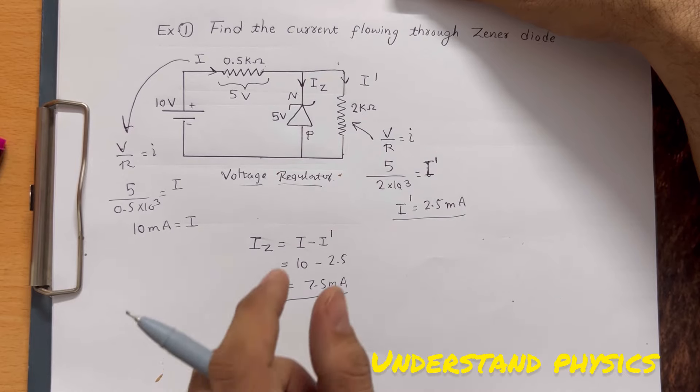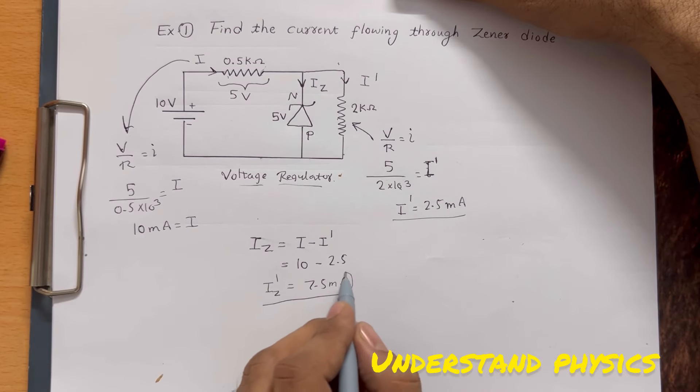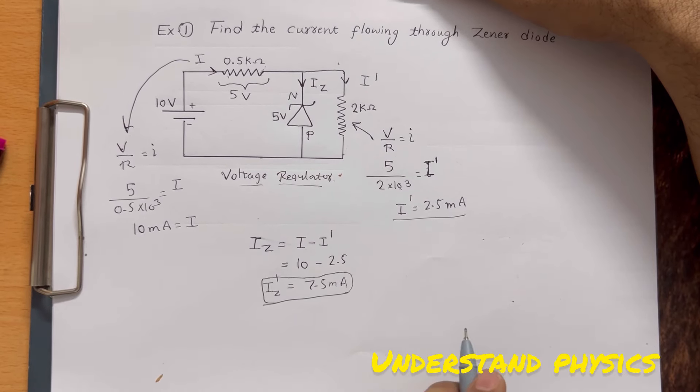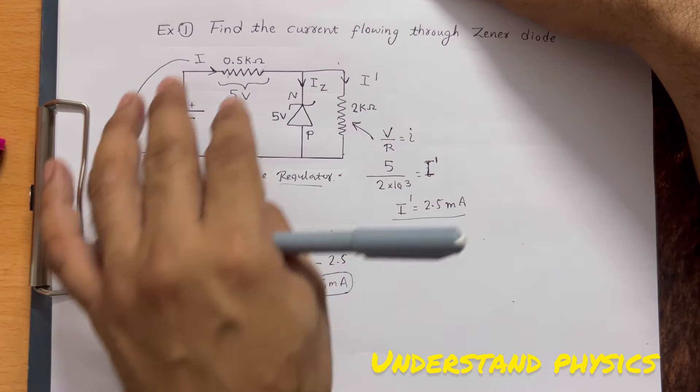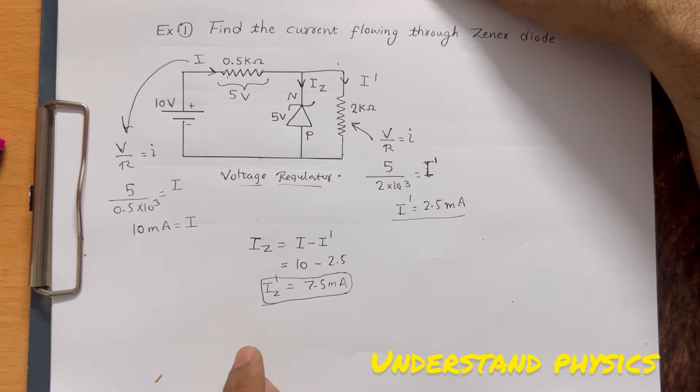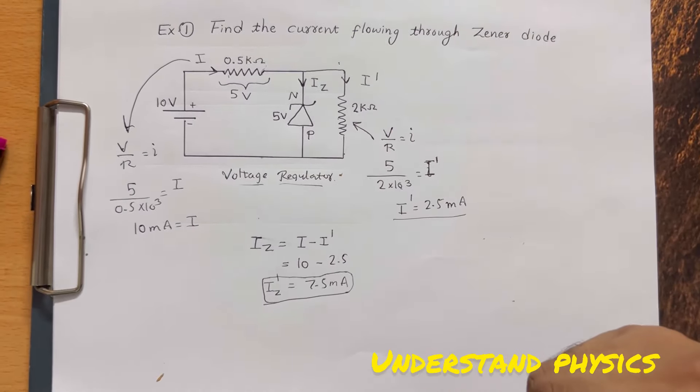This is the current through the Zener diode. Here we got the answer. I hope it's clear. This kind of numerical problem sometimes comes in entrance exams. Soon we will meet with the next video on physics.